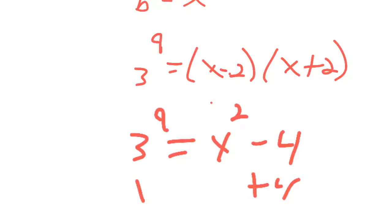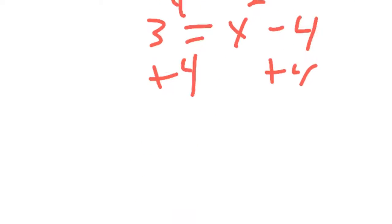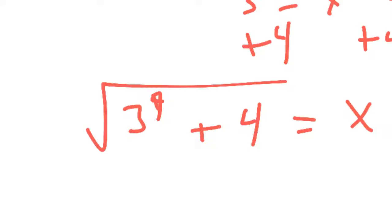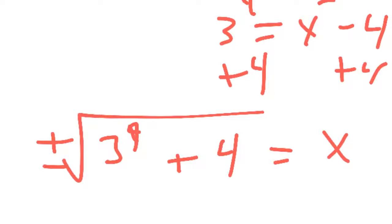And so if we add 4 to both sides, then if we take the square root so we can get x squared by itself, x is going to be positive or - oops - x is going to be the positive or negative version of the square root of 3 to the 9th plus 4. Then we took a square root after all that because we had to get x squared by itself.